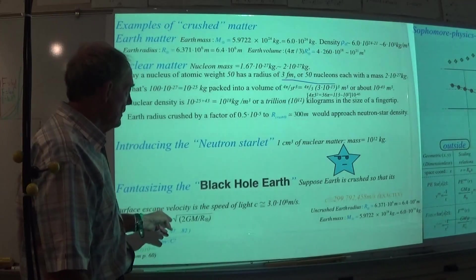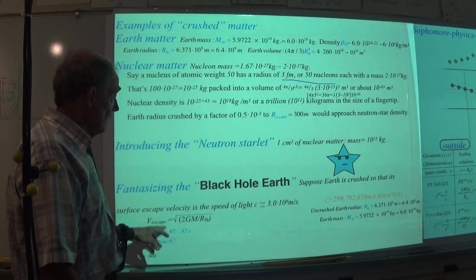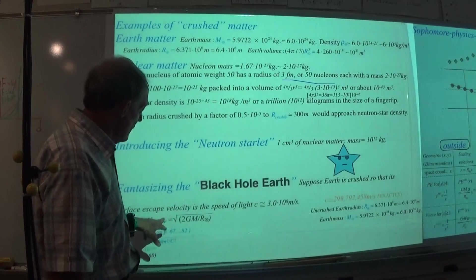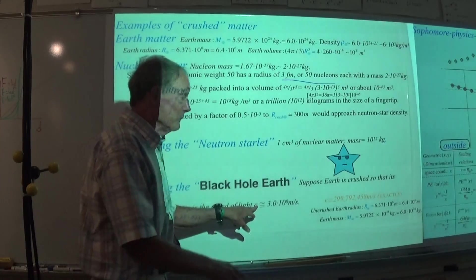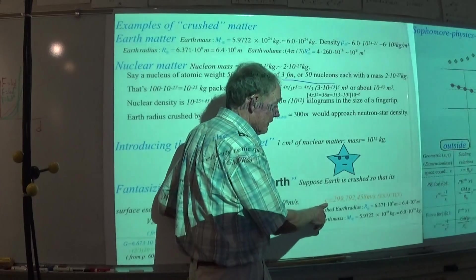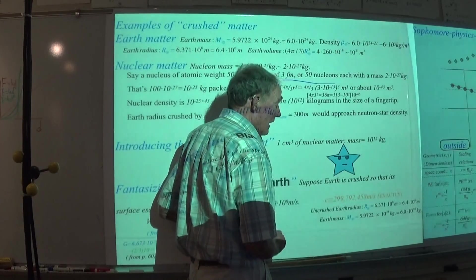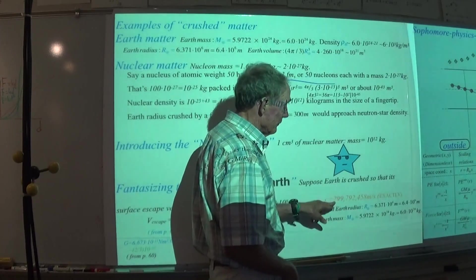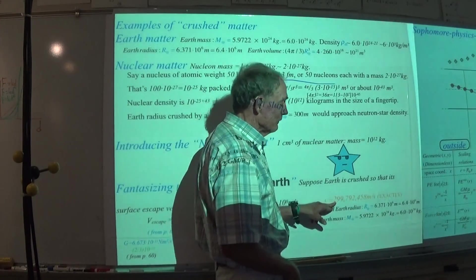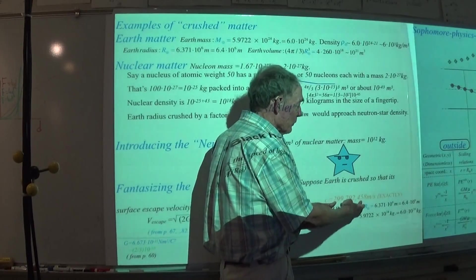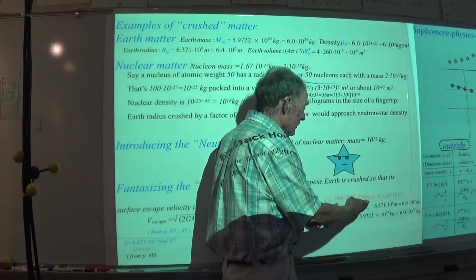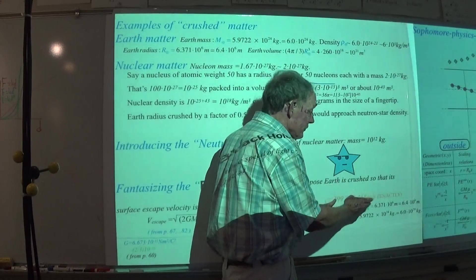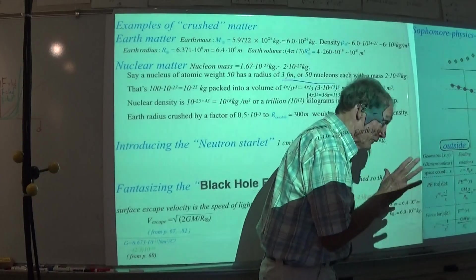So suppose the Earth is crushed so that that escape velocity that we mentioned back there around page 67 of this particular lecture. The idea being that I would figure out what would happen if I made the thing so dense that this escape velocity becomes approaching good old speed of light.